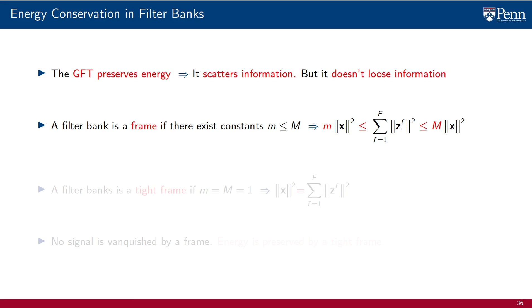We enforce this by imposing restrictions on the filter choice. A filter bank is said to be a frame if there exist constants little m and uppercase M such that the sum of the output energies escapes the energy of the input signal by no less than m and no more than M. If the two constants are moderate, the energy at the output is not too different from the energy at the input, and this must hold for all signals x. If both constants are one, the inequalities must hold with equality — we then say the filter bank is a tight frame. The equality implies energy conservation: the energy of the input signal equals the sum of the energies of the individual output signals of the tight frame filter bank.